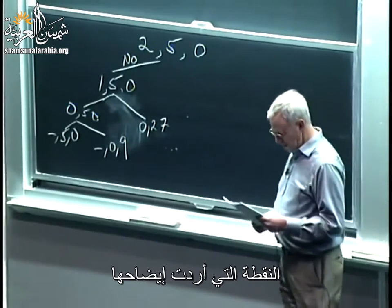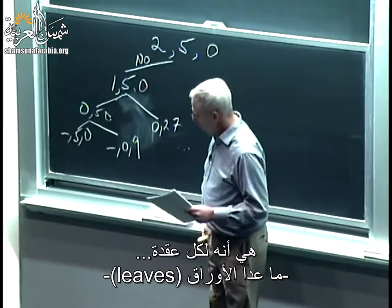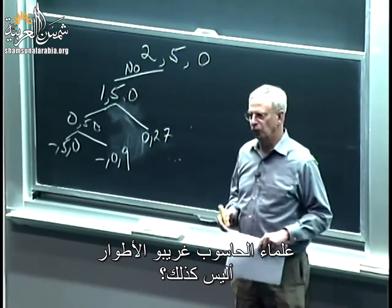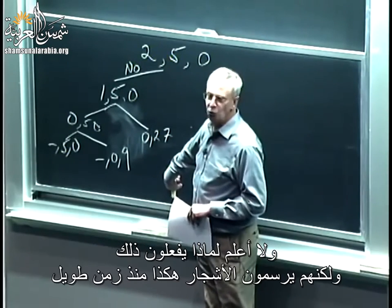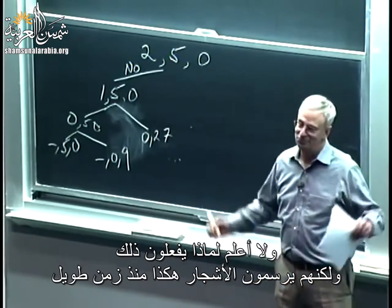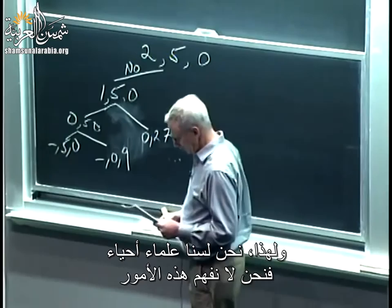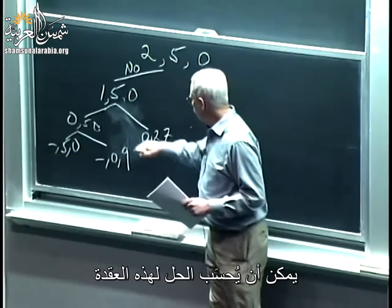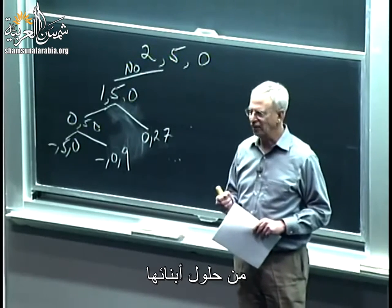The point I wanted to make is that for every node except the leaves — the leaves are the bottom of a tree in this case. Computer scientists are weird: they draw trees where the root is at the top and the leaves are at the bottom. That's why we're not biologists, I guess. But what I want you to notice is that for each node except the leaves, the solution for that node can be computed from the solutions from its children.